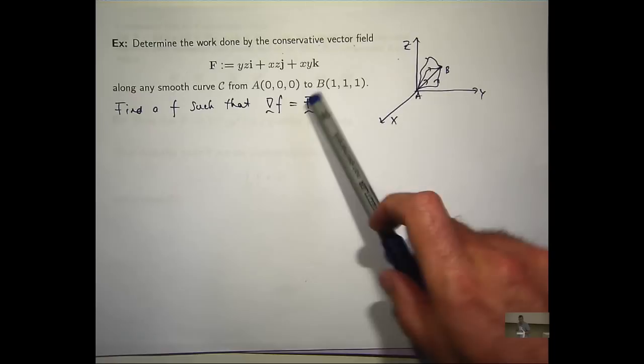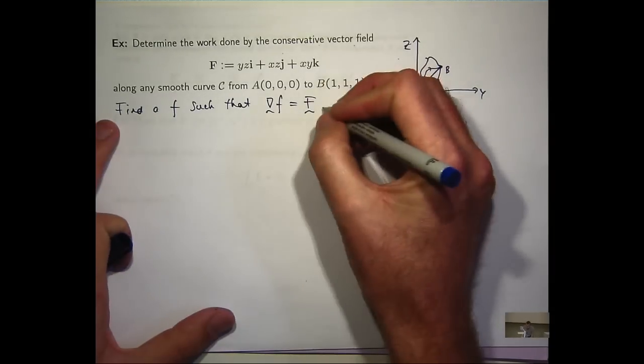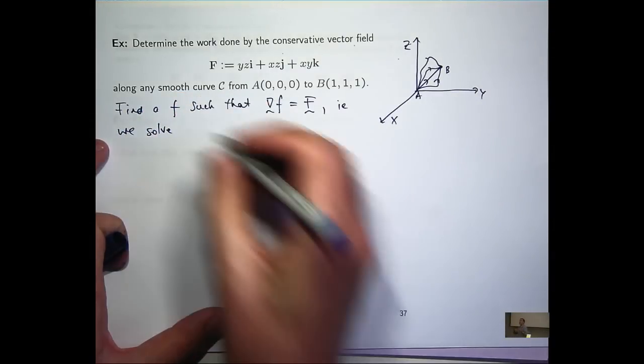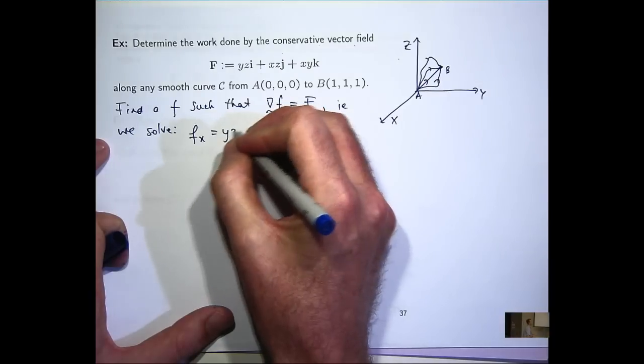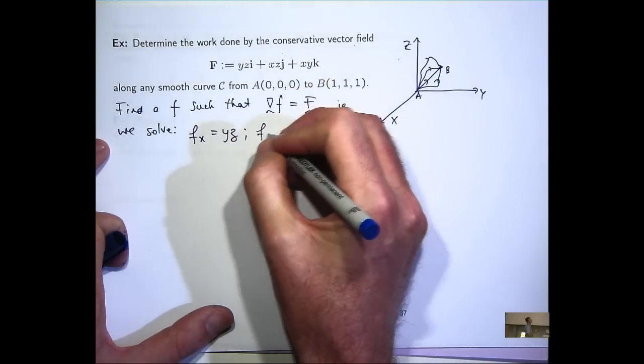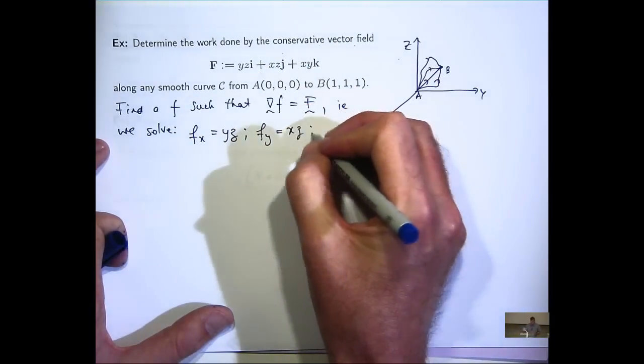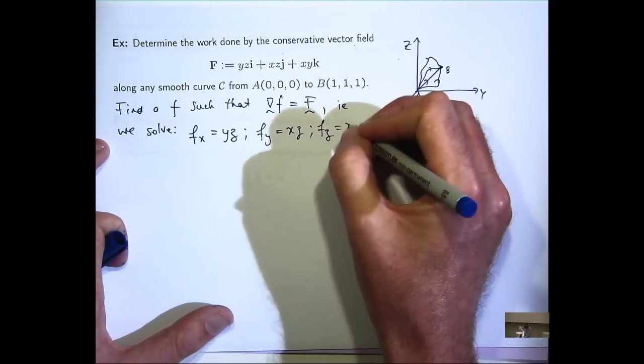But with this one it's pretty easy to guess. But sometimes it's not so easy to guess. So let me just write down an extra line to give you some... We want to solve df/dx equals this, YZ. df/dy equals a second component function, X times Z. And df/dz equals X times Y.